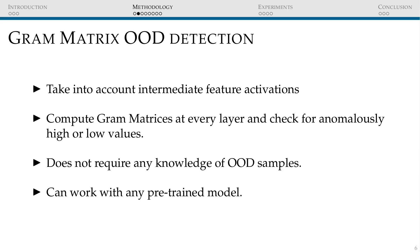As we present an extension of the Gram-OOD method, we will describe it in some detail. Like the Mahalanobis method, it looks at intermediate feature activations to detect the OOD samples. It uses the Gram matrix to compute layer-wise correlations in order to find anomalies. There are two main advantages of this method: first, it does not require access to out-of-distribution samples in order to train or fine-tune the method; second, it is agnostic to the model and works with any pre-trained model.